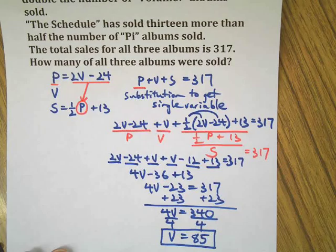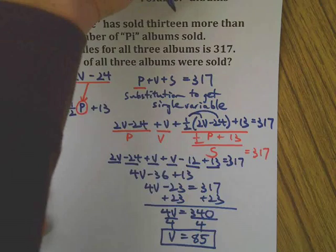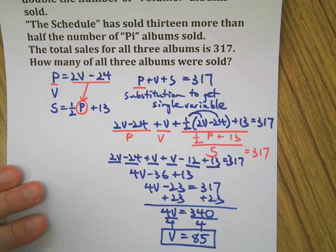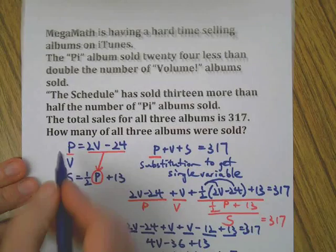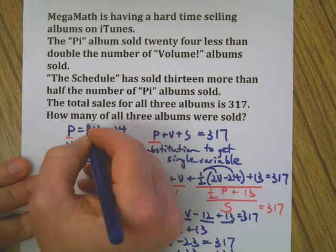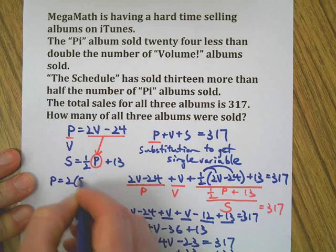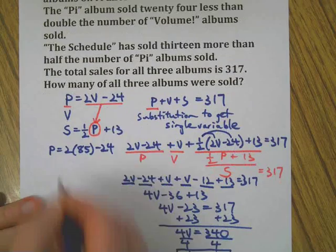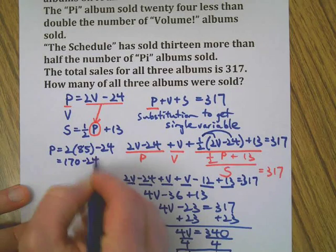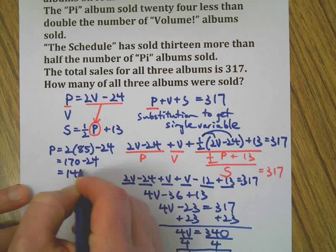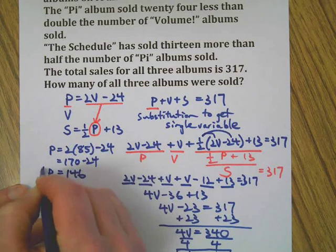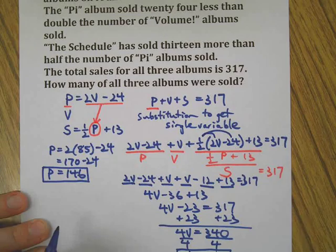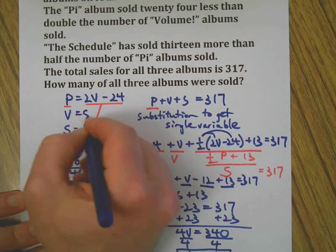Okay, that's my chair squeaking, by the way. Come on now. Take the 85 back up to the original equation and let's figure this out. So the Pi album is 2 times the Volume album, 24 less than that. 2 times 85 minus 24—that equals 146 Pi albums sold.